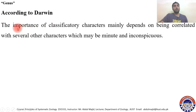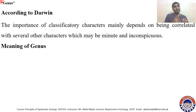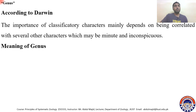According to Darwin, the importance of classificatory characters mainly depends on being correlated with several other characters, which may be minute and inconspicuous. In constructing this hierarchy, we correlate several characteristics — sometimes very minute and not clearly visible — and depend on those small characteristics for classificatory purposes.